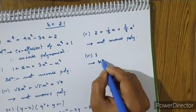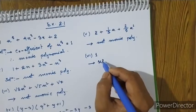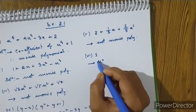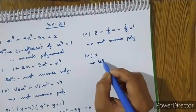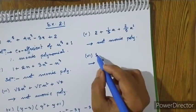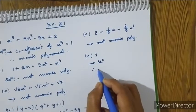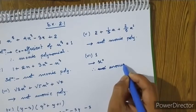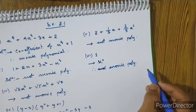This is x to the power 0, which is equal to 1. We can write this as 1 times x to the power 0. Now we are going to write a polynomial with degree and monic classification.